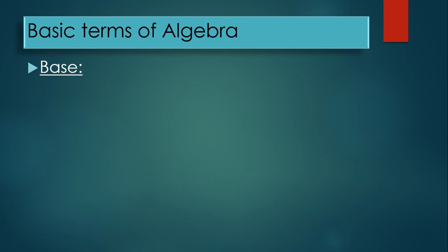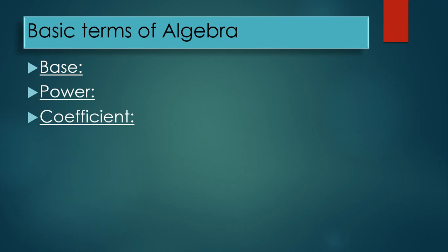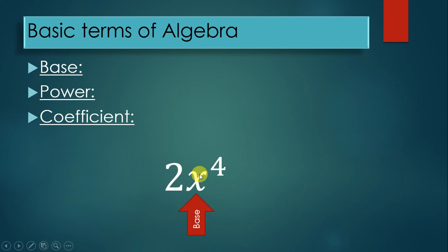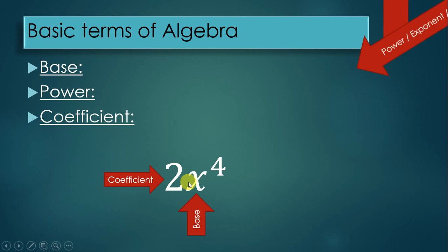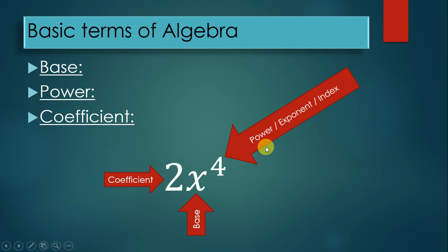Next is the term 'base.' Whatever we raise to a power is the base. For example, in 2x⁴: x is the base, 4 is the power (also called the exponent or index), and 2 is the coefficient. So in 2x⁴ — x is the base, 4 is the exponent/index, and 2 is the coefficient.